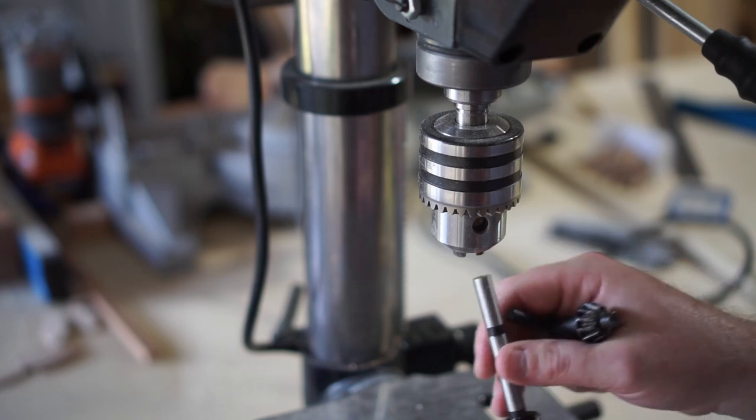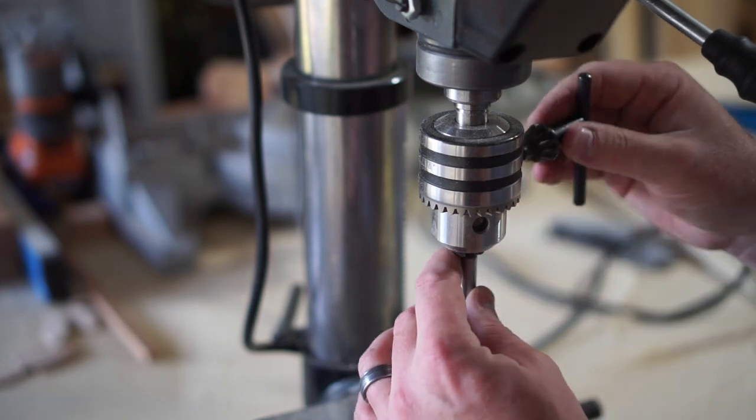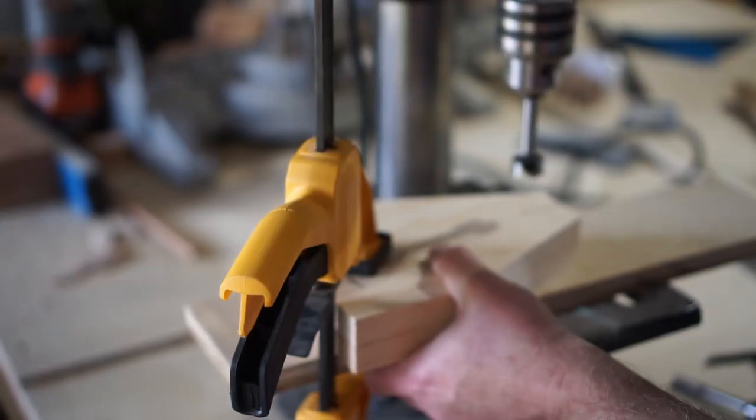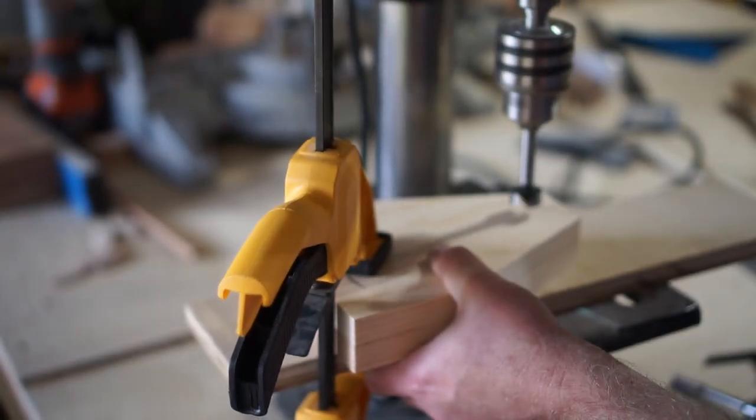Then I used a 7/8-inch forstner bit on my drill press to drill the two holes in the two end pieces. If you don't have a drill press, you could hand drill these with a hand drill.